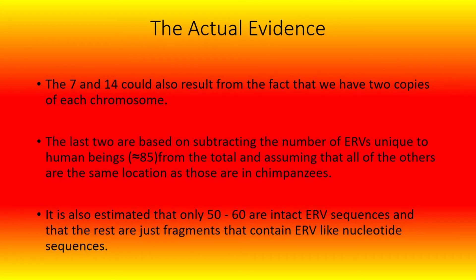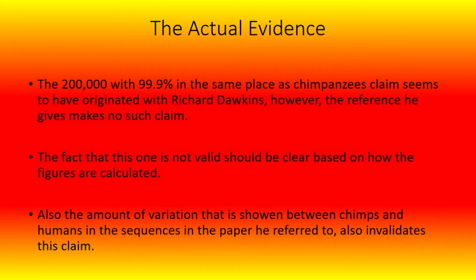The 7 and 14 figures could also result from the fact that we have two copies of each chromosome. The last two are based on subtracting the number of ERVs unique to human beings — approximately 85 — from the total, and assuming that all of the others are the same location as those of chimpanzees. The 200,000 with 99.9% in the same place as the chimpanzees claim seems to have originated with Richard Dawkins. However, the reference he gives makes no such claim, and the amount of variation shown between chimp and human sequences in the paper he referred to also invalidates it.